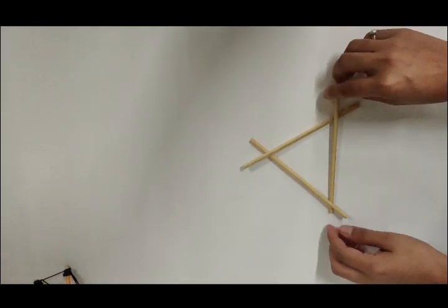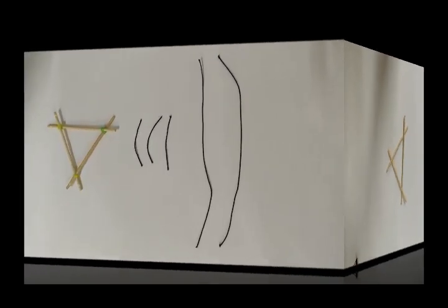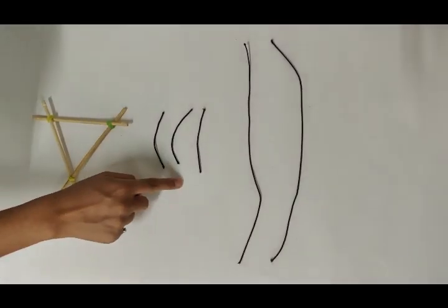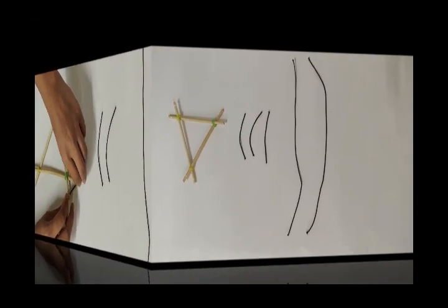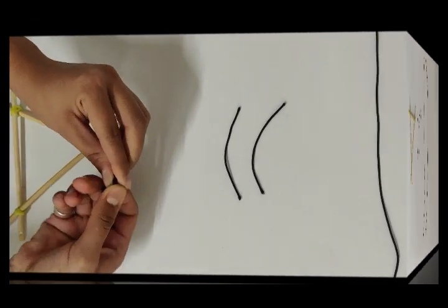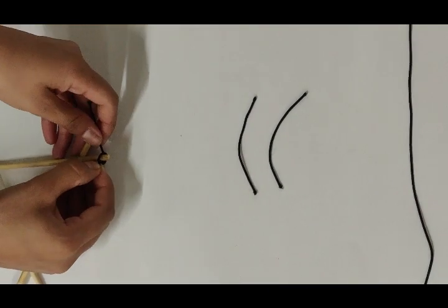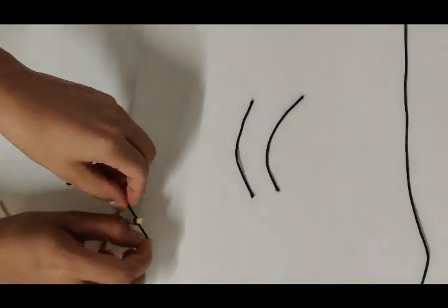Arrange the sticks as shown. Tie rubbers at each intersection to hold the members in position. Cut the string into three small parts and two longer parts having lengths 8 centimeters and 22 centimeters approximately. Now tie the knots as shown in the video.